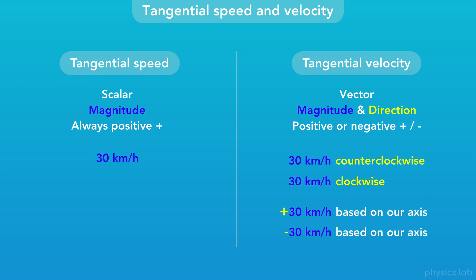Or, instead, we could say positive or negative 30 kilometers per hour, based on our axis, where the positive and negative tell us the direction.